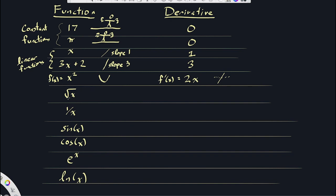Now the square root of x is the first one that might be a little tricky. One way to figure out its derivative is to phrase it in terms of an exponent — the square root of x is really x to the 1/2. So we use the power rule to bring down the 1/2 and decrease that exponent by 1, giving a derivative of 1/2 x to the negative 1/2. Some people would rewrite this as 1 over 2 times the square root of x. The negative exponent puts this on the bottom of a fraction, and the 1/2 puts it in the square root.